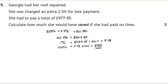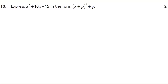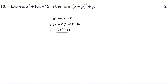Question ten: express x² + 10x − 15 in completed square form. We write (x + 5)², since 5 is half the coefficient of x. But 5² = 25 introduces an extra term, so we subtract 25 and carry the −15 down. That gives (x + 5)² − 25 − 15 = (x + 5)² − 40.